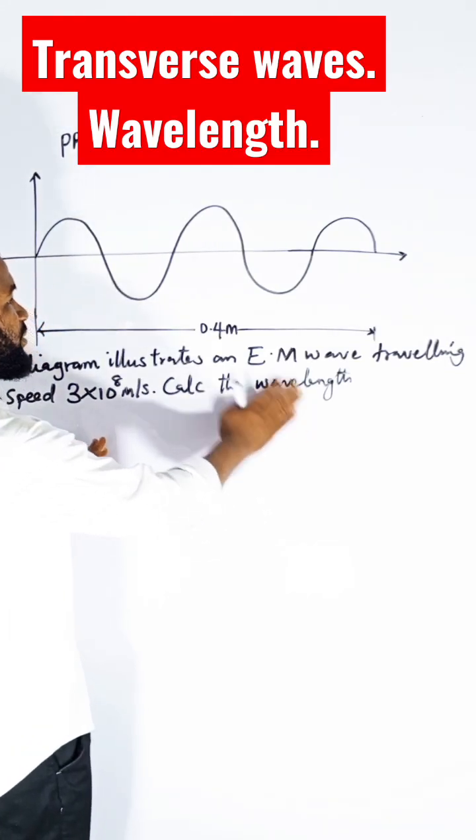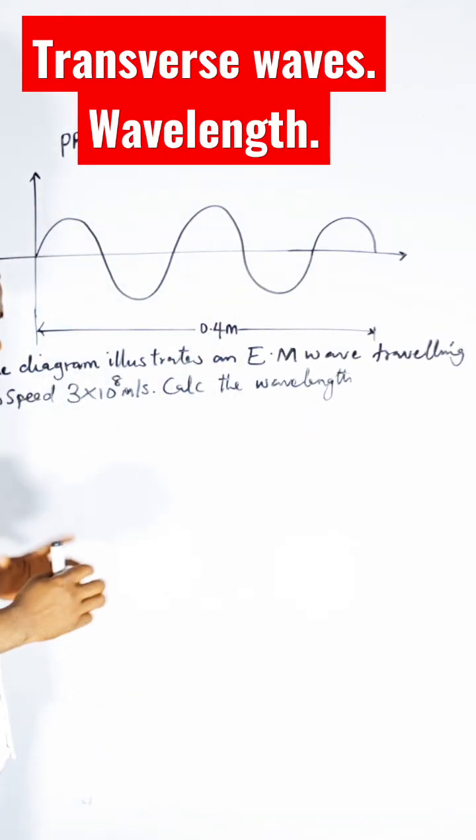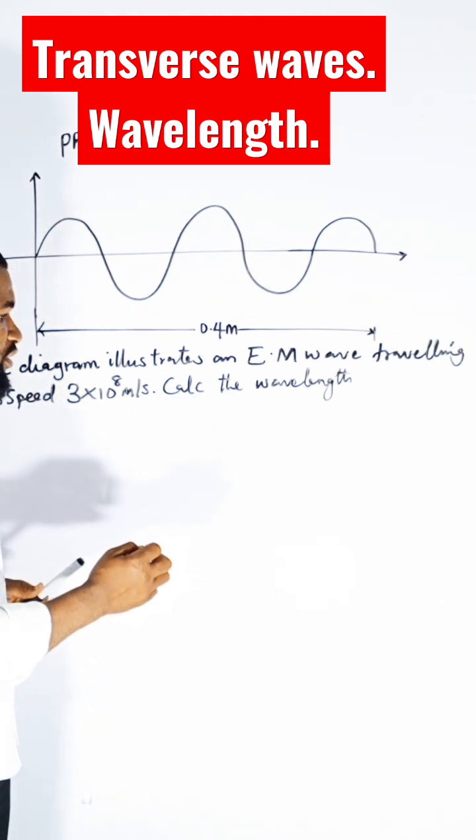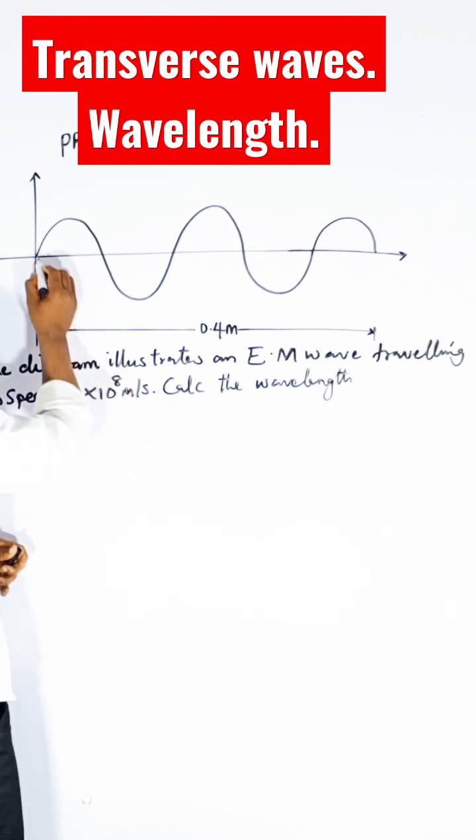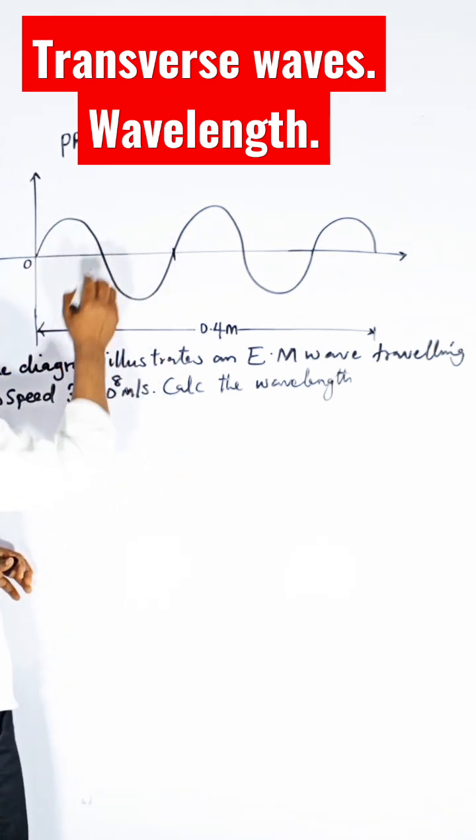We should find the wavelength of this wave. To find the wavelength, I am going to first note that one wavelength from the beginning—this is the origin to this first place—gives me one wavelength.